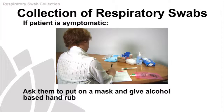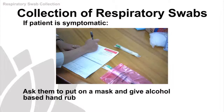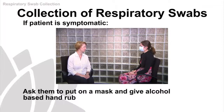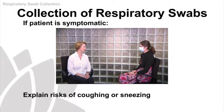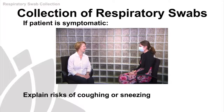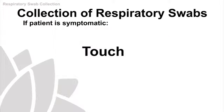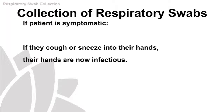The patient has been identified as requiring swabs to be taken. If symptomatic, they should be wearing a mask and have access to alcohol-based hand rub. You need to explain to the patient that if they're going to cough or sneeze, to turn away and cover their nose with tissues and dispose of them correctly. It's also important to explain that touch is one of the major ways of transmitting a virus to other people — if they cough or sneeze into their hands, their hands are now infectious.